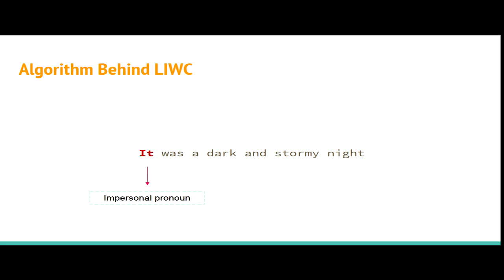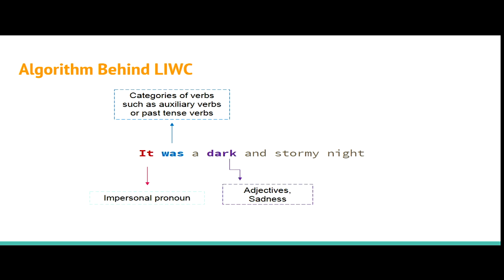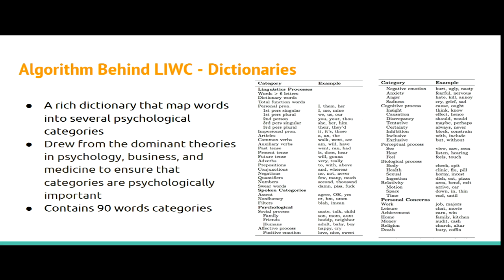Here's a simple illustration. For the sentence 'it was a dark and somewhat light,' the program goes through the very first word — 'it' — and matches it with the dictionary, classifying it as an impersonal pronoun. 'Was' would be classified as an auxiliary verb as well as a past tense verb. Then 'a' might be categorised as an adjective or linked to sadness. The dictionary is organised so that each sub-dictionary has its own psychological category. On the left side of this diagram, you can see categories for linguistic processes.